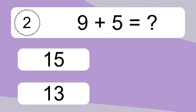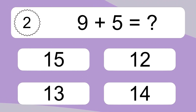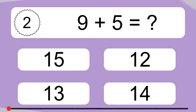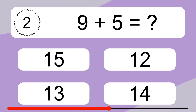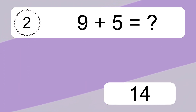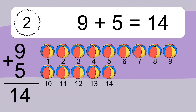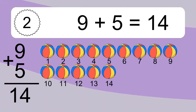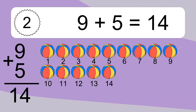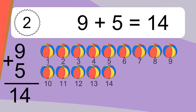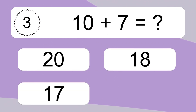9 plus 5 equals what? 9 plus 5 equals 14. Let's count it. 1, 2, 3, 4, 5, 6, 7, 8, 9, 10, 11, 12, 13, 14.